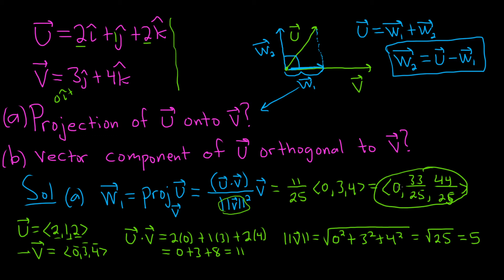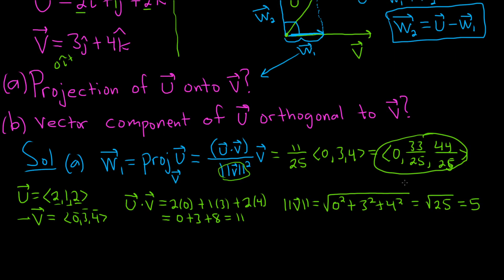Part B is to find w2, which is the vector component of u that's orthogonal to v. So w2 equals u minus w1.